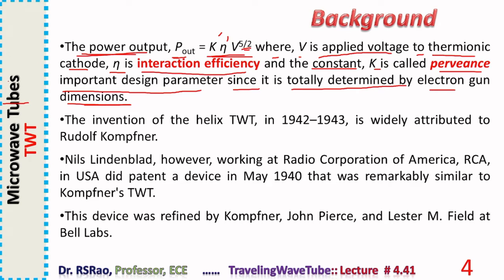TWTs employ an electron gun that emits electrons. The helix TWT uses a helix as its slow wave structure. Other structures are also possible, but the helix is the most common.